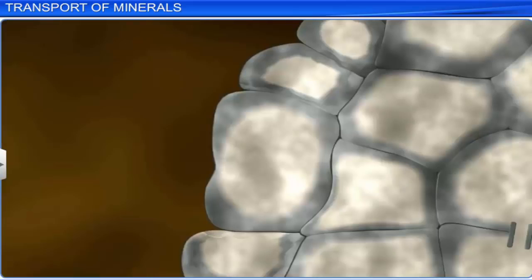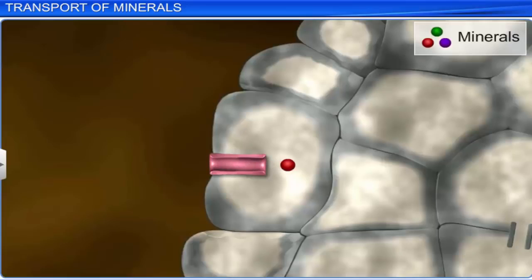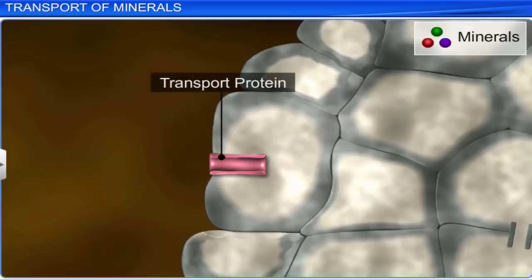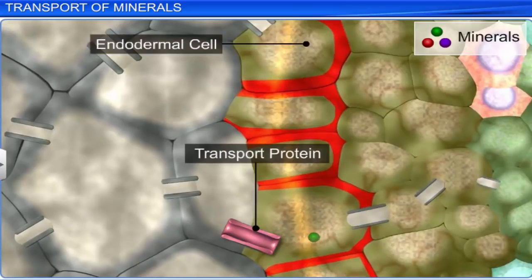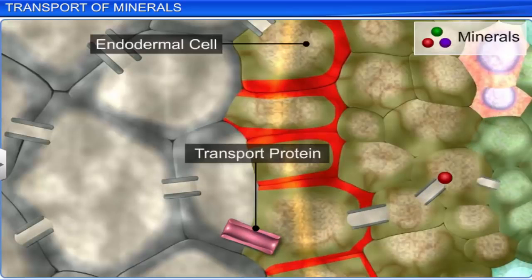Furthermore, the membranes of root hair cells have some specific proteins such as calcium ATPases, called transport proteins, which actively pump ions into the epidermal cells from the soil. The endodermal cells of the root also have many transport proteins embedded in their plasma membrane. These transport proteins serve as control points where they adjust the quantity and selectively allow certain types of solutes to cross the membrane to reach the xylem.